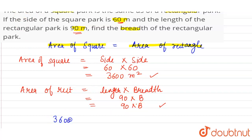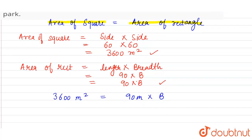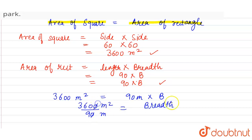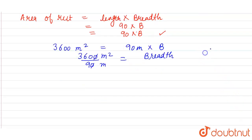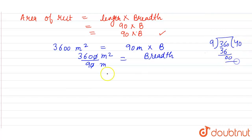So 3600 square meters equals 90 meters into breadth. Since 90 is in multiplication, it will be divided on the other side. So breadth equals 3600 divided by 90. The zero cancels, giving 360 divided by 9. Since 9 into 40 is 360, the breadth equals 40 meters.